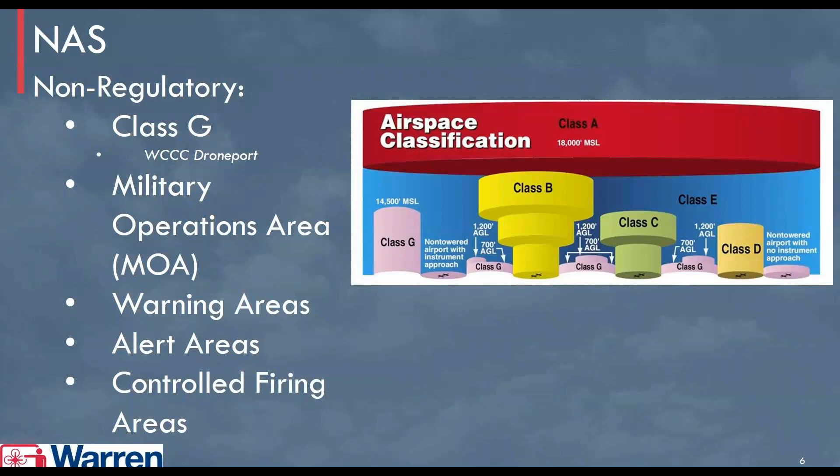Non-regulatory airspace — not necessarily regulated by a federal agency, though it may be regulated by the military — would be Class G. The Warren County Community College Drone Port, or the Smith Drone Training Center, falls within Class G airspace, and we'll cover this in Part 2.